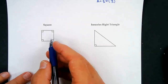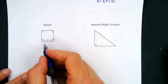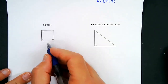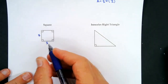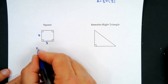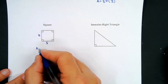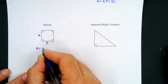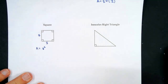For a square: it has four right angles and all four sides are the same length — we call each one a side. The area is side times side, or side squared.